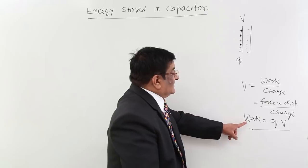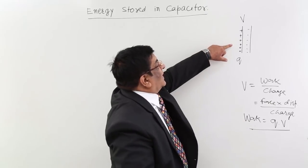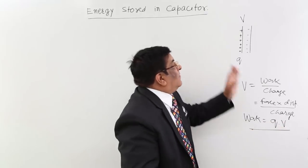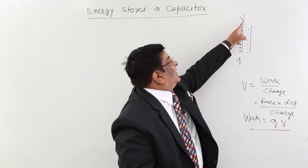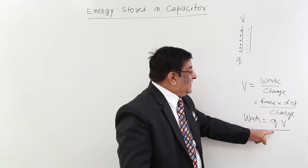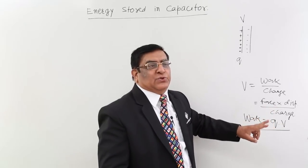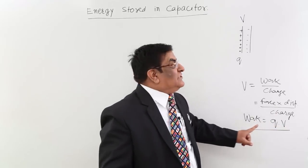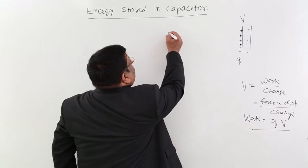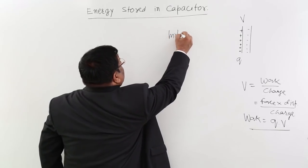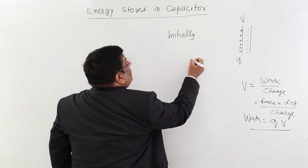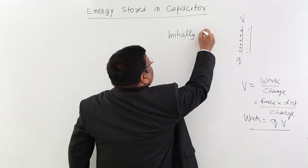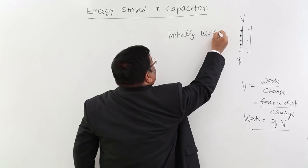But the thing is that when we started working, the potential was zero. When we put certain charge, potential increased. Again we put certain charge, potential increased. So finally it has come to this value. So initially, how much work we did? Initially, we had to do work when we were putting first charge, we had to do work zero.